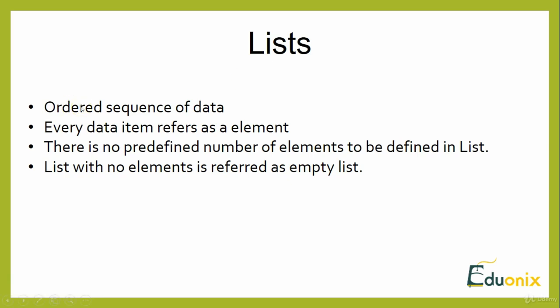A list is an ordered sequence of data. Each data item stored in a list is called an element. There are no predefined number of elements — a list does not have a fixed size. A list with no elements is referred to as an empty list.